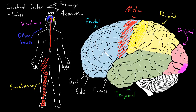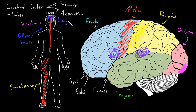One aspect of cognition is language — the ability to turn thoughts into words and vice versa. In most people, language is performed by certain areas of cerebral cortex in the left hemisphere, though some people have language functions on both sides or predominantly on the right.